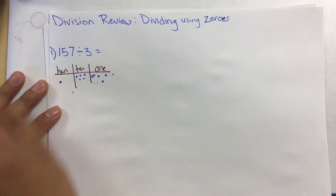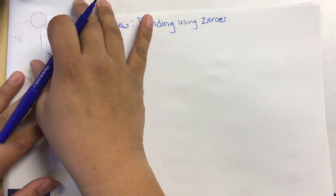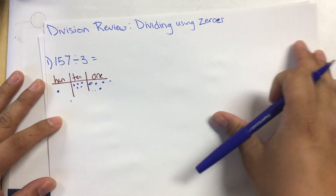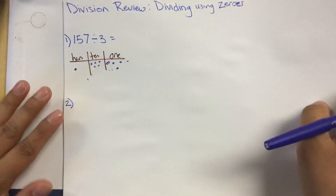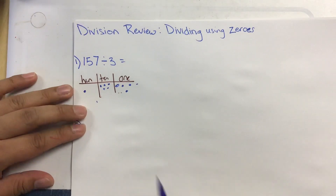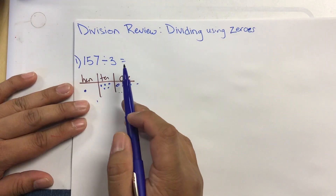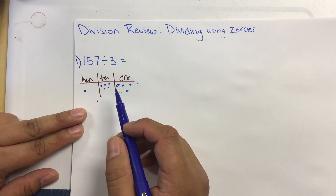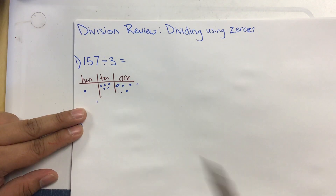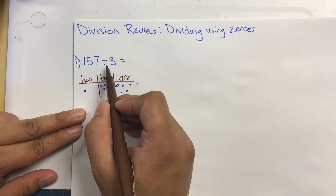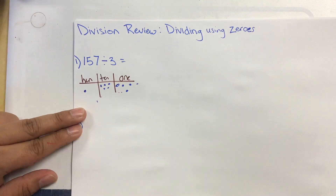Alright Jaguars, this time we're going to be looking at division, and specifically what happens when we encounter a zero — when we start to divide and realize we can't do that division. In this case we're looking at 157 divided by three.